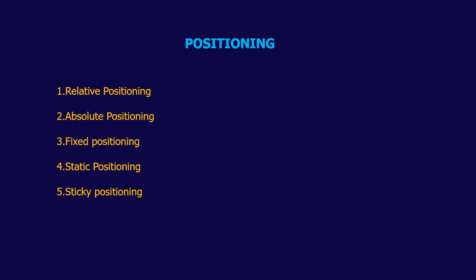What are the positioning values in CSS? Here we have five positioning values in CSS. The first one is Relative Positioning, Absolute Positioning, Fixed Positioning, Static Positioning, and Sticky Positioning.